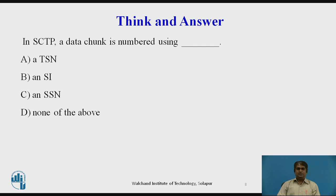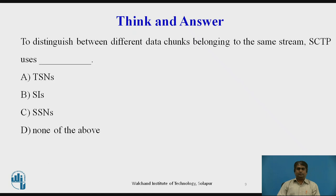A data chunk is numbered using a TSN (transmission sequence number). To distinguish between different data chunks belonging to the same stream, SCTP uses SSNs (stream sequence numbers).